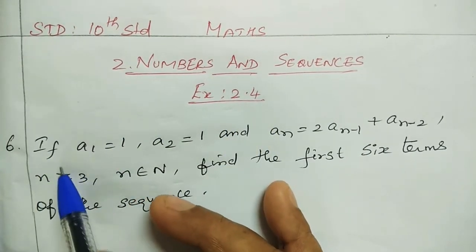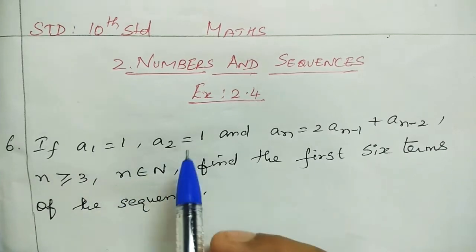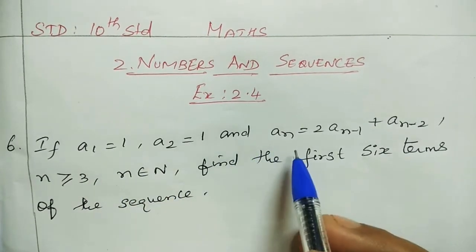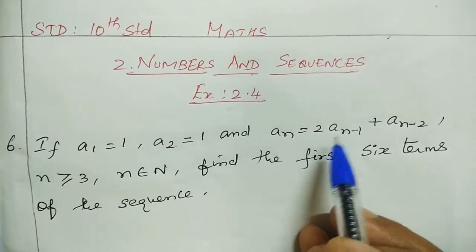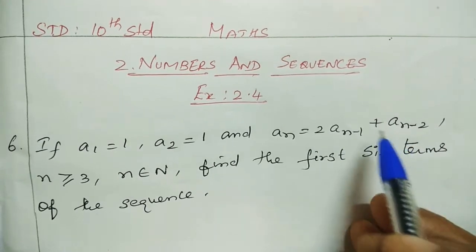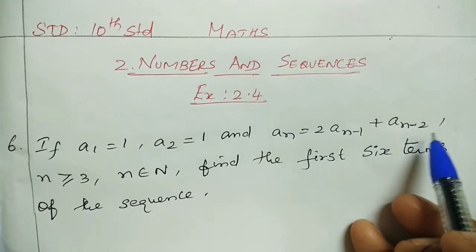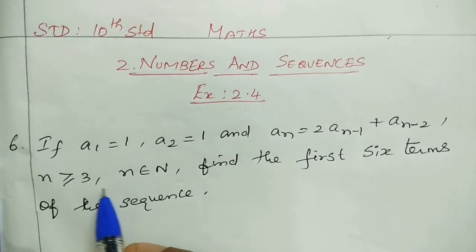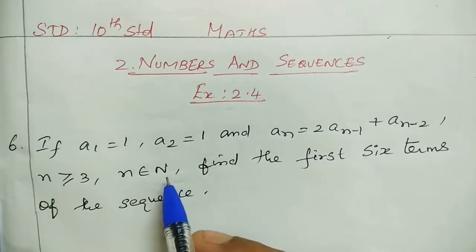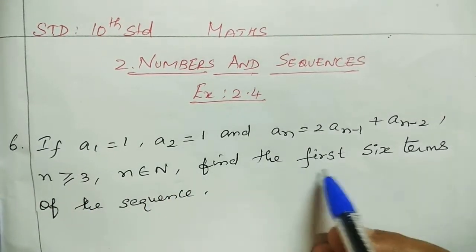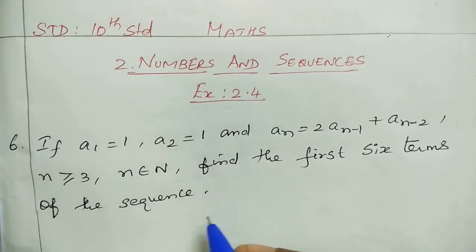Sixth question: If a1 equals 1, a2 equals 1, and an equals 2 times an minus 1 plus an minus 2, where n is greater than or equal to 3, n belongs to N, find the first six terms of the sequence.